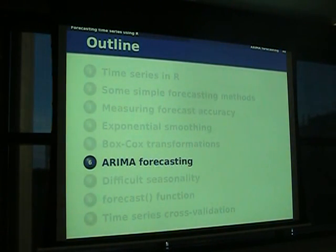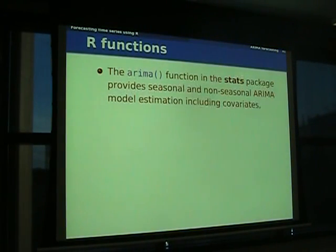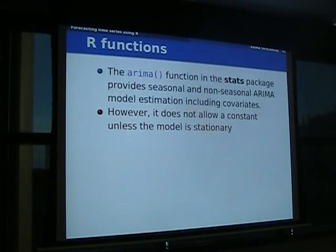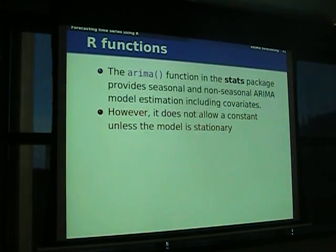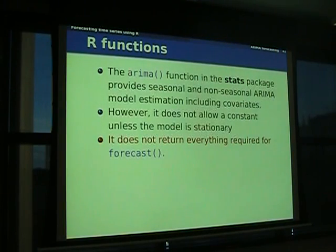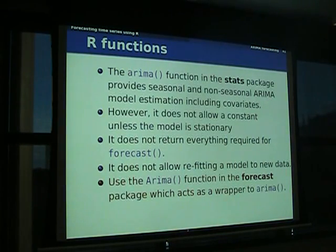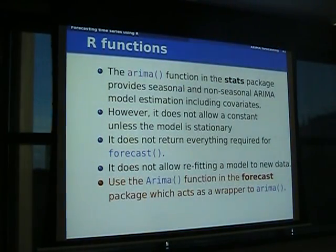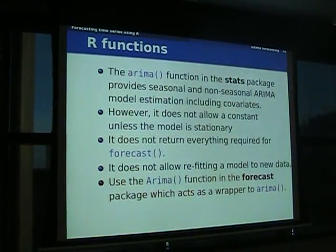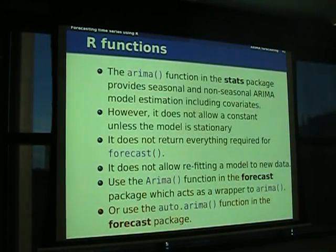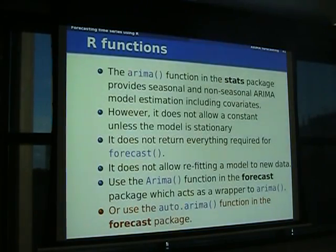I can't really do ARIMA forecasting any justice here, but let me tell you what functions exist. In the stats package there is a function called arima() that does a nice job of estimation. However, it does something funny with the constant so you can't have a constant if you do any differencing, it doesn't return everything you need for the forecast() function, and it won't allow refitting on new data. So I wrote a wrapper called Arima() — capital A — which calls the lowercase arima() but adds the bits needed for forecasting. If you don't know what you're doing, and ARIMA modeling is actually pretty hard, use auto.arima() and it will find a model for you.